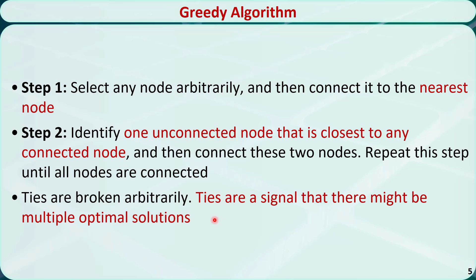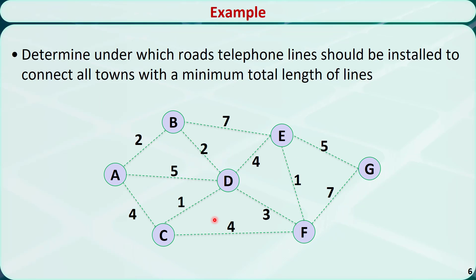Let's check this example. There are 7 towns, represented by nodes A through G. Determine at which roads telephone lines should be installed to connect all towns with the minimum total length of lines. The potential length accompanied with each potential line is provided in this graph.